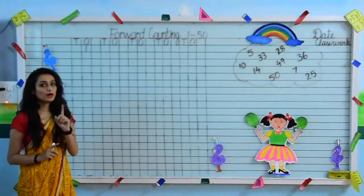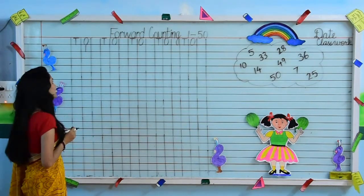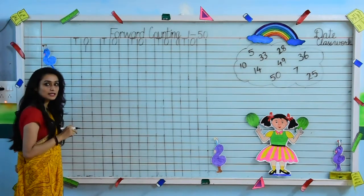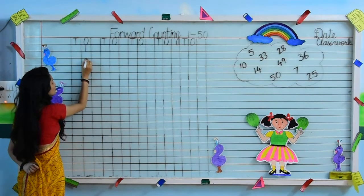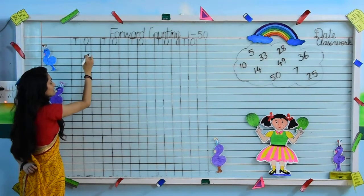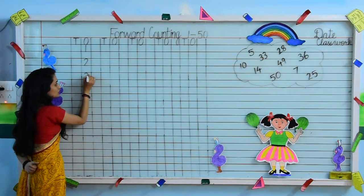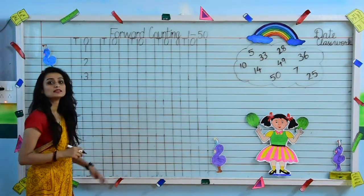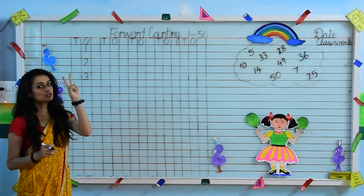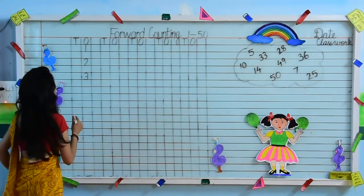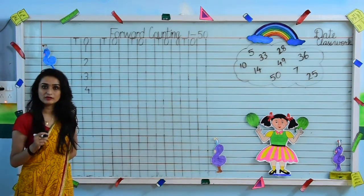You have to leave 1 block after writing each digit, because of which your copies and workbooks will look very neat and beautiful. Leave 1 block and come on the next digit. What comes after 1? The next number is 2. Then comes 3 — curve, again a curve, this makes 3. After 3, the next number is 4 — slanting line, sleeping line, and a small standing line. This way we make 4.